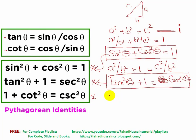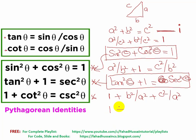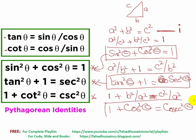For the third identity, we divide by a squared. This gives 1 plus b squared over a squared equals c squared over a squared. According to the trigonometric values of the three sides, b squared over a squared equals cot squared theta, and c squared over a squared equals cosec squared theta. So the third identity is: 1 plus cot squared theta equals cosec squared theta.